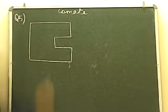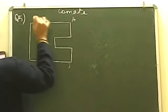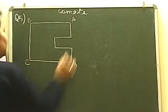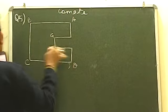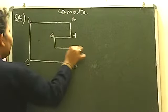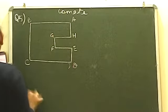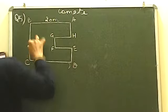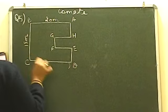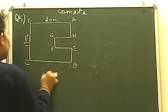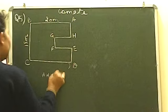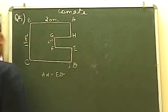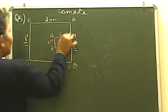This is the figure. It has points named A, B, C, D, G, H, E, and F. This side is given as 20 meters and this is given as 15 meters. AH is equal to ED, and this is given as 6 meters and this is 8 meters.